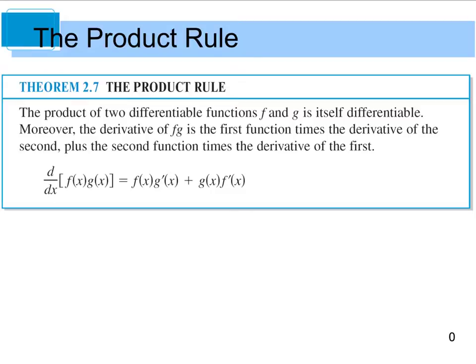The product rule says that if you take the product of two differentiable functions, then their derivative is going to be the product of the first function times the derivative of the second, plus the second function times the derivative of the first. So the notation for this is right here: you have the first function f, times the derivative of the second function, plus the second function times the derivative of the first. And we will do a couple examples with this.